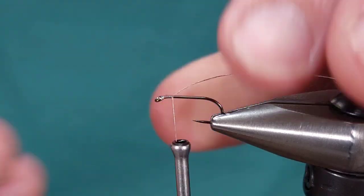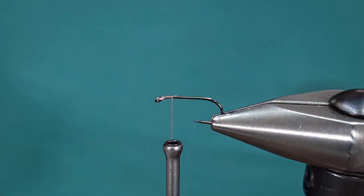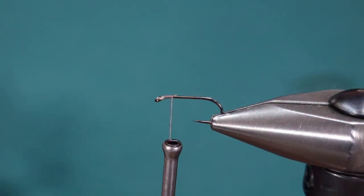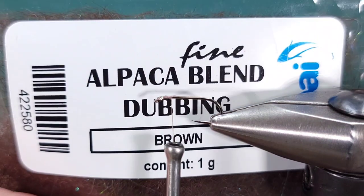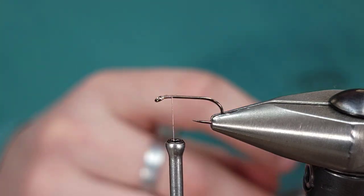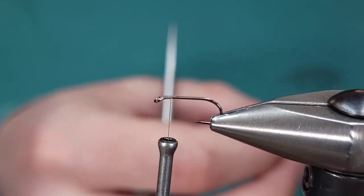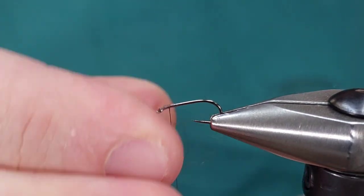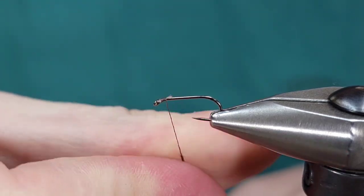For this fly I'm going to get started right behind the hook eye and take a couple wraps. Then I'm actually going to start with my dubbing, which here is fine alpaca dub from Sabai, but you can use any dry fly or alpaca dubbing.